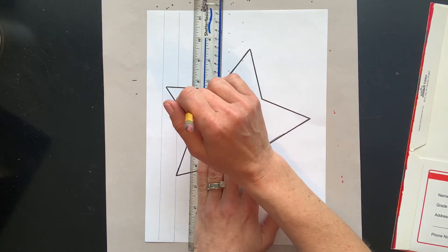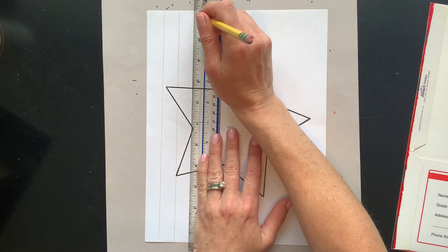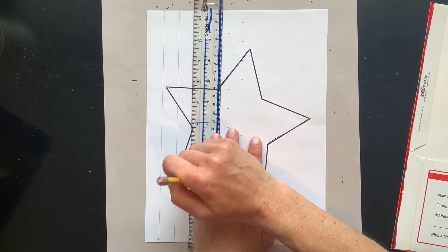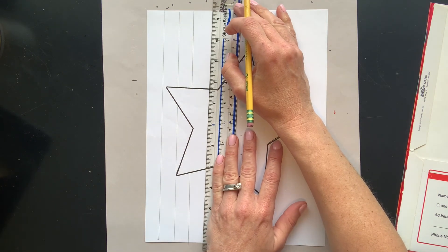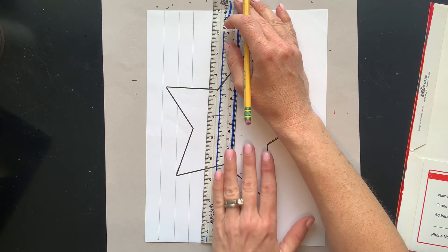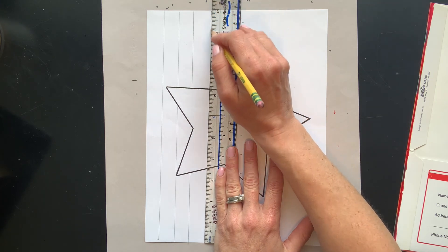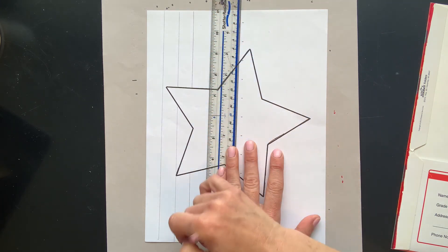Now, do not go through your star, okay? When you hit your star, stop, jump over it, and continue your line. Move it over. Stop, jump over it, and continue your line.